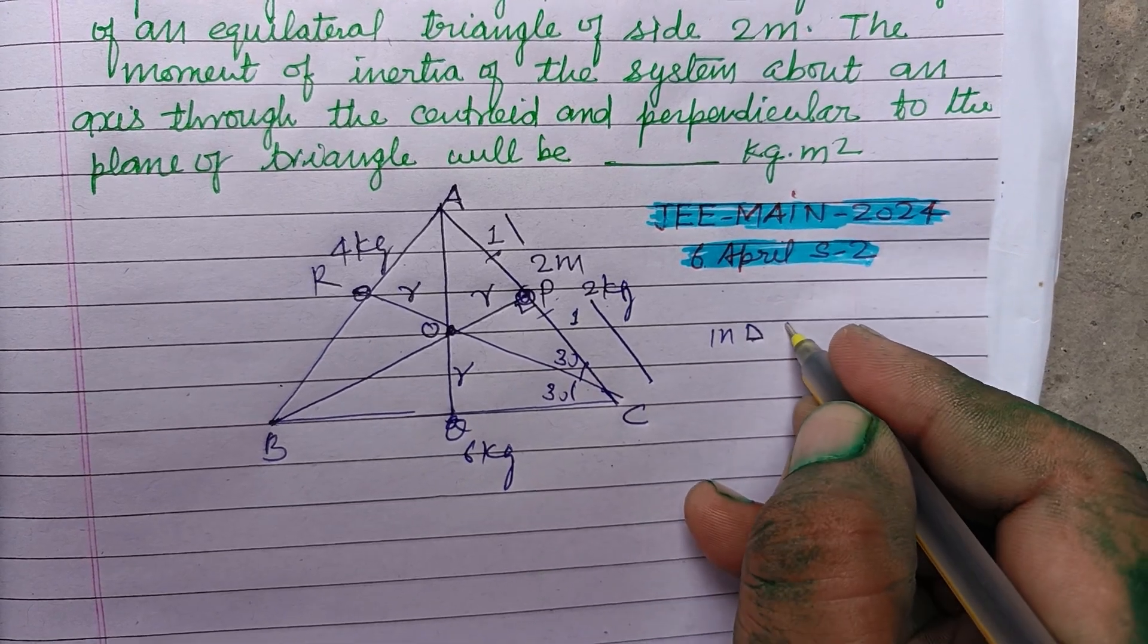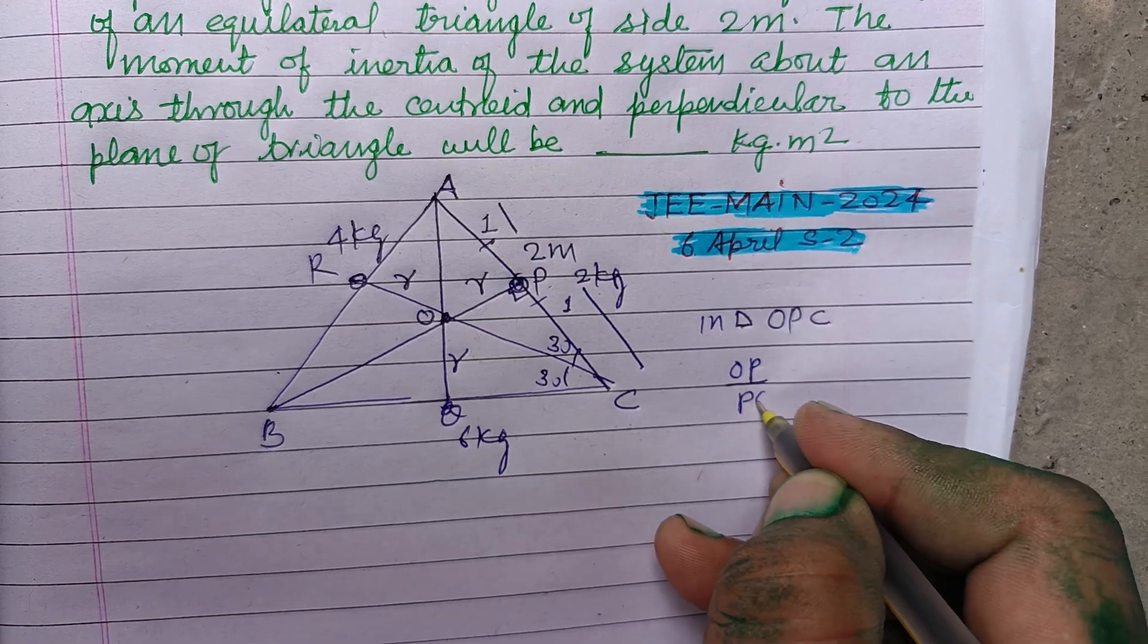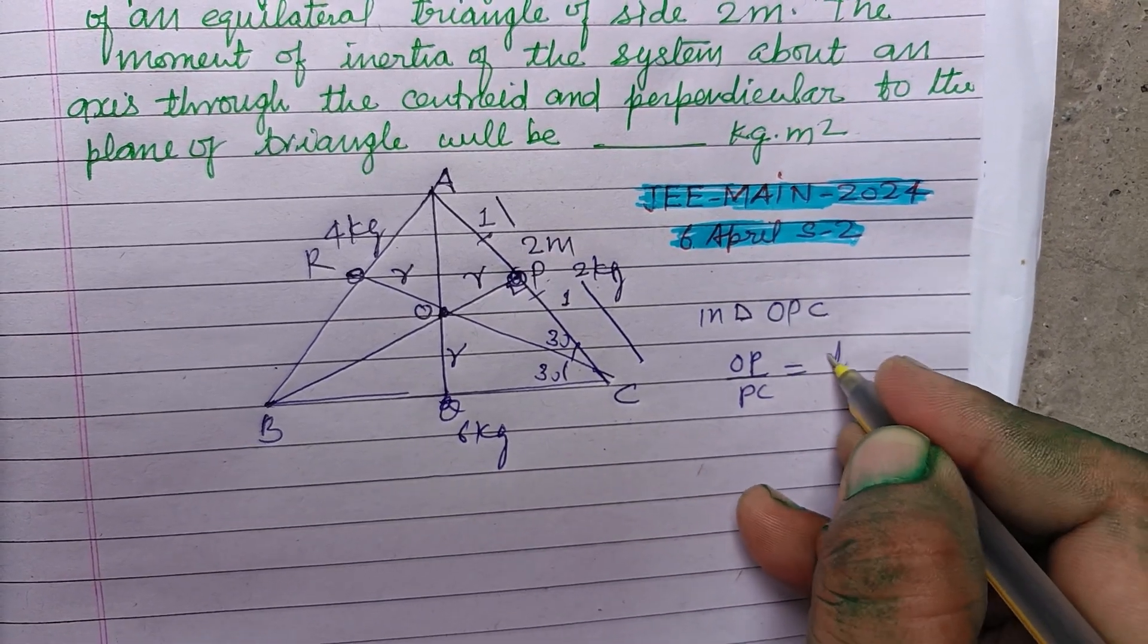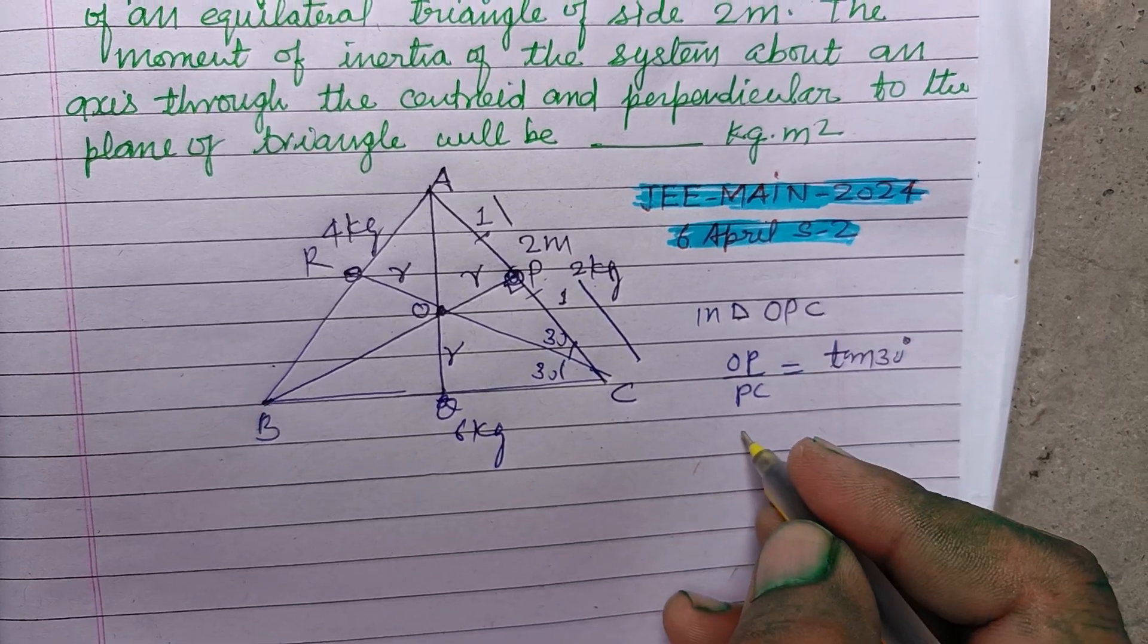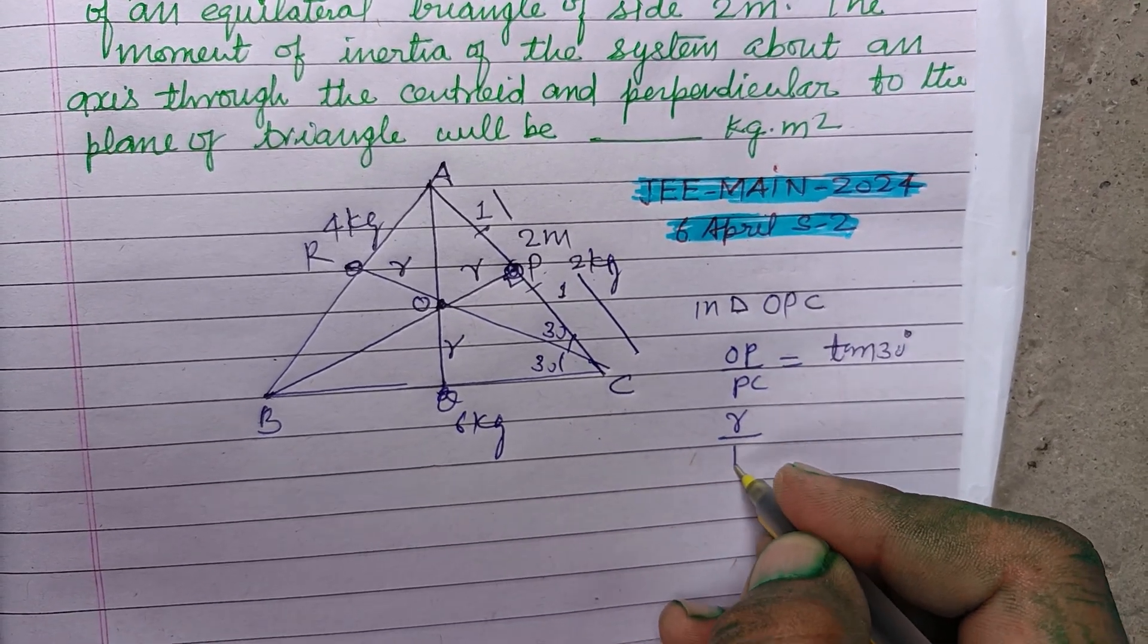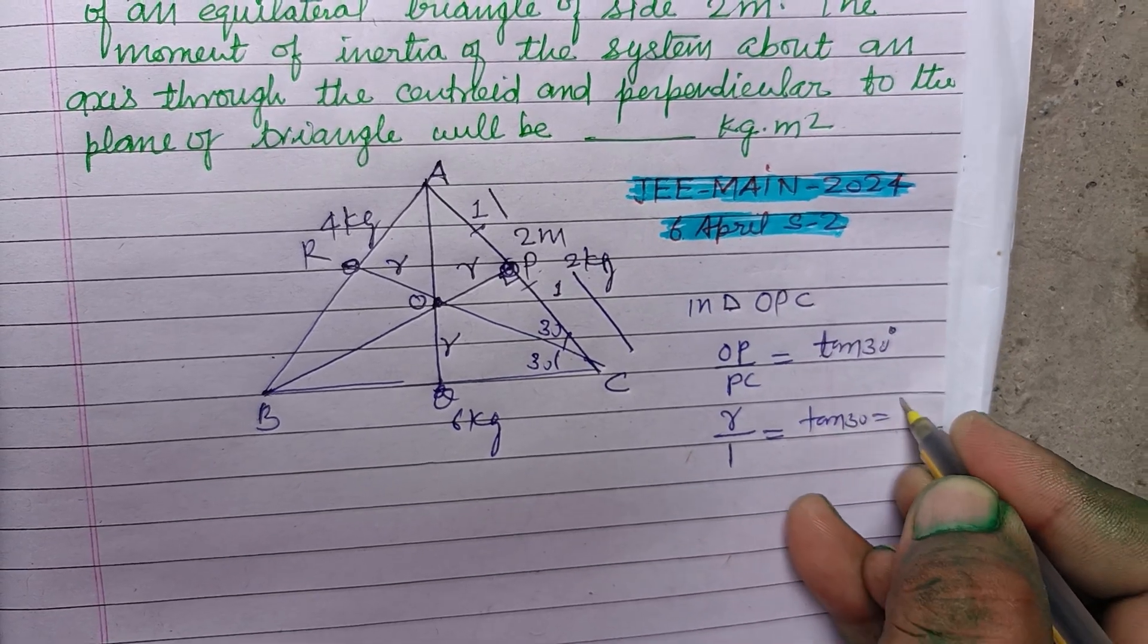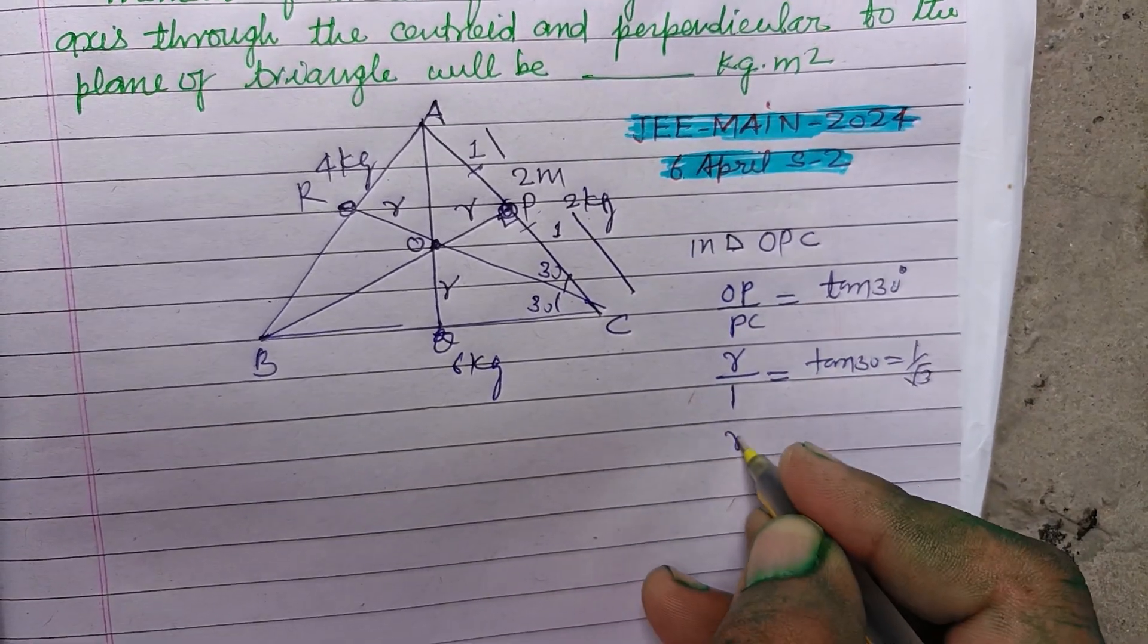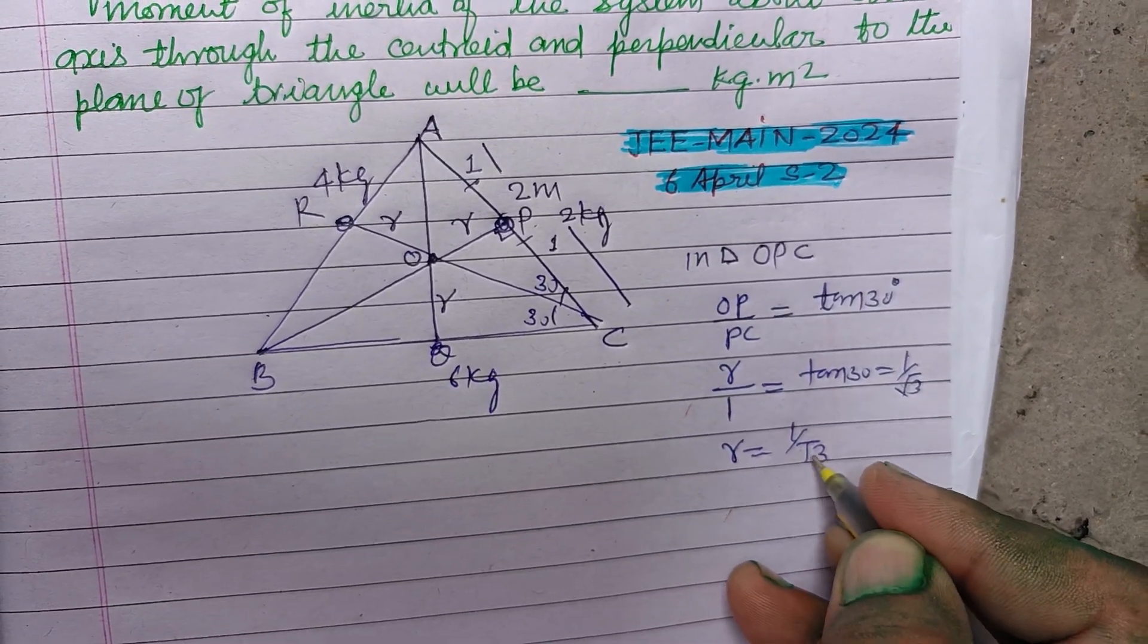So in right angle triangle OPC, OP over PC equal to tan 30. OP is R and PC is 1. Tan 30 equal to 1 upon root 3, therefore R equal to 1 upon root 3.